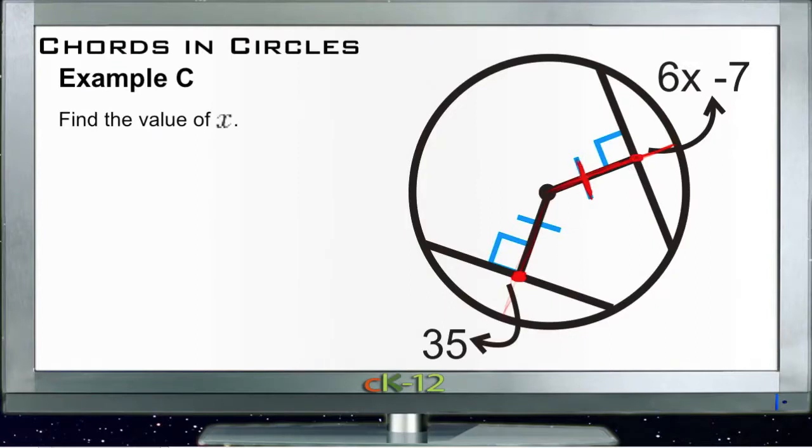And we know that because of this little hash mark right here. So if this line segment from the center to the lower section right here is congruent to this line segment up here, and they meet these chords at 90 degrees, then we know that these two chords must be congruent.